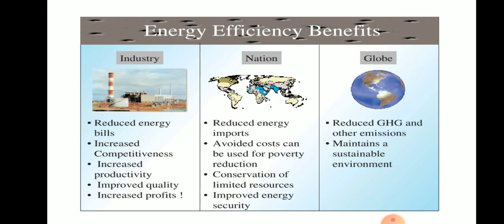The industrial sector accounts for about 41 percent of global primary energy demand and approximately the same share of CO2 emissions. The benefits of energy efficiency in the industrial sector include reduced energy bills, increased competitiveness, increased productivity, improved quality, and increased profit. At the national level, benefits include reduced energy imports, cost savings that can be used for poverty reduction, conservation of limited resources, and improved energy security. Globally, it helps reduce CO2 emissions and maintain sustainability.